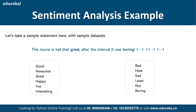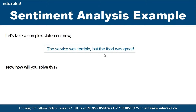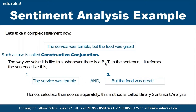Sometimes sentences are more complex, like: 'The movie is not great after the interval, it was boring.' Here 'not' is negative (minus one), 'great' is positive (plus one), 'boring' is negative (minus one) — so the overall score is negative. There are even harder cases, like: 'The service was terrible but the food was great.' This is called a constructive conjunction. We break it into two sentences and score them independently — this is called binary sentiment analysis. One sentence is negative, one is positive, and together we decide the overall sentiment.